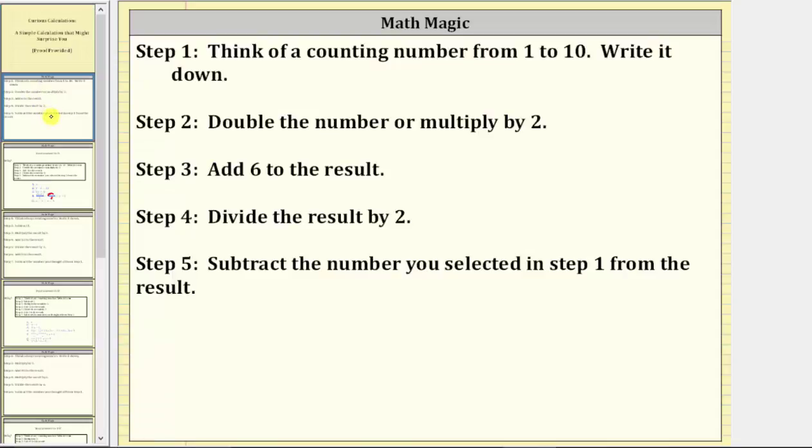To begin, step one is to think of a counting number from one to ten, and write it down so you don't forget. Step two, double the number or multiply by two.